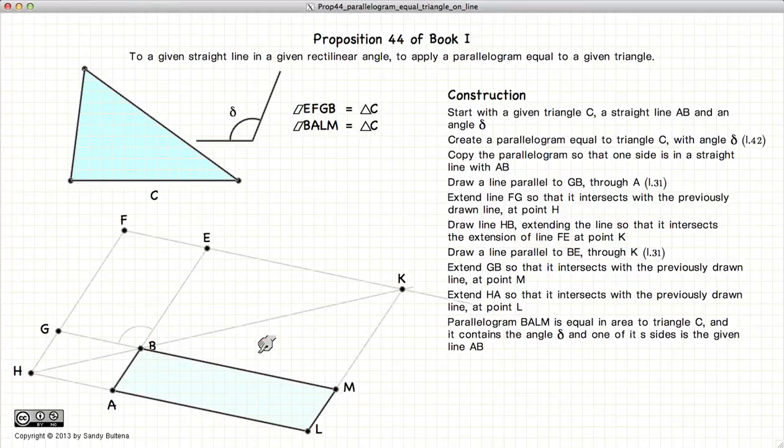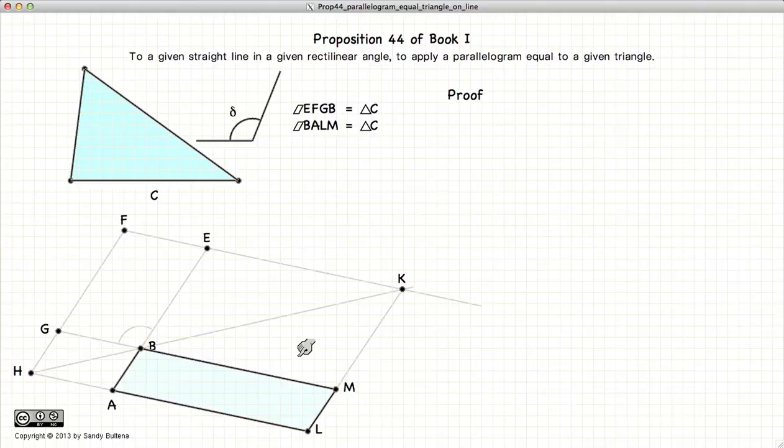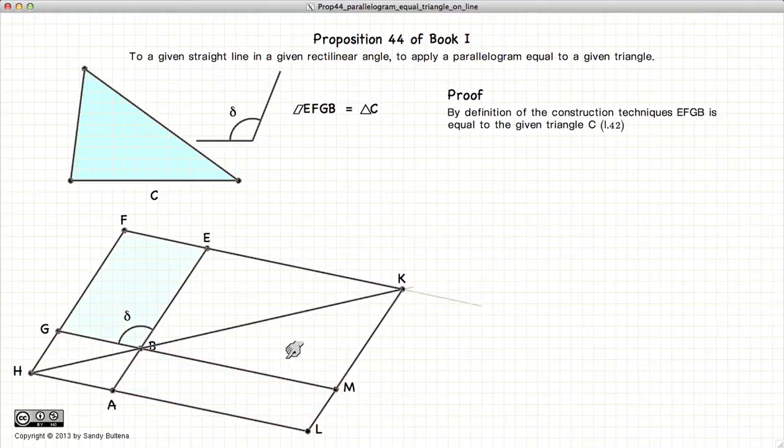So how do we prove that this construction is valid? Well, first, by our construction methods using the methods defined in Proposition 42, these two areas are equal.